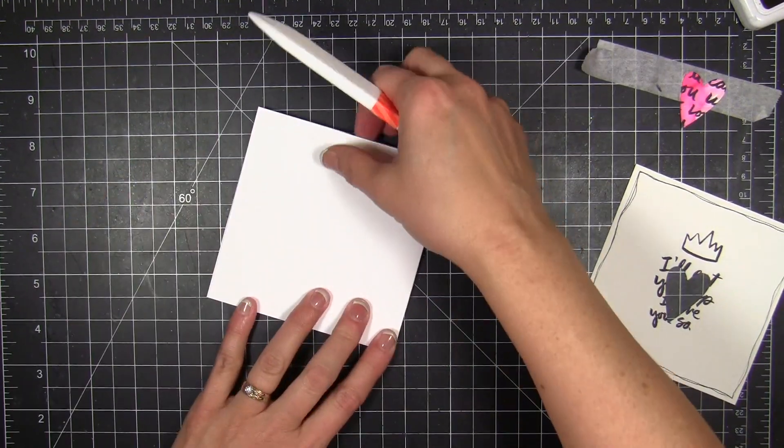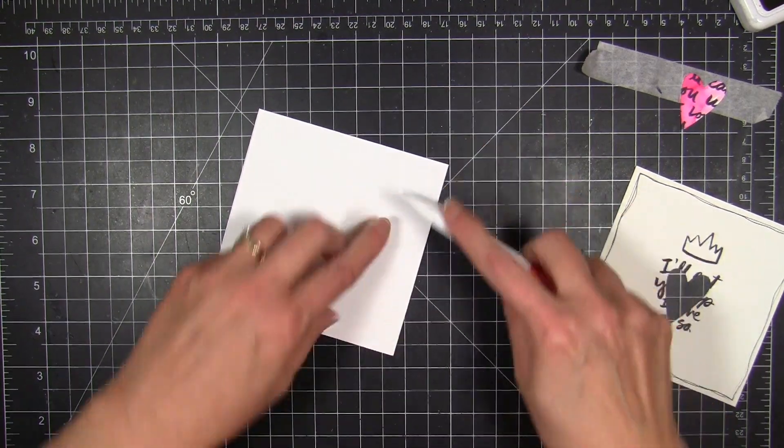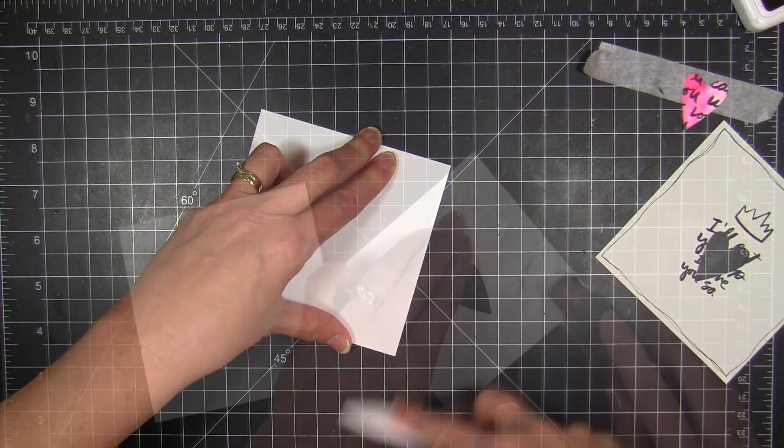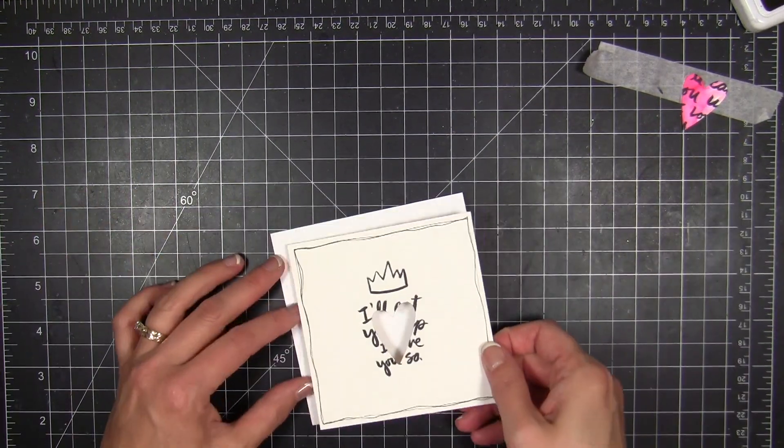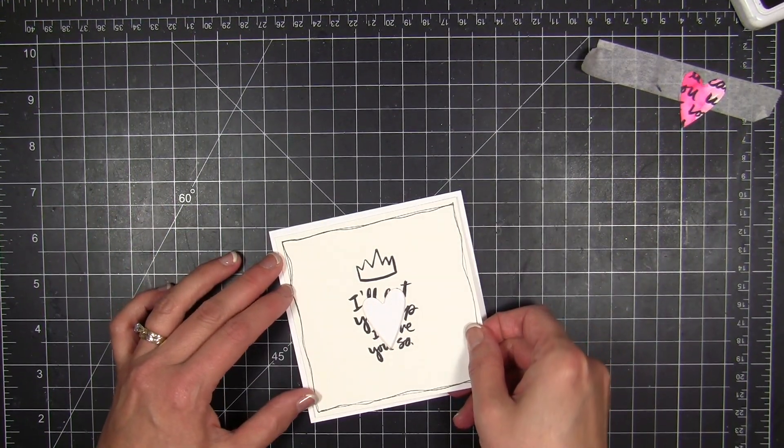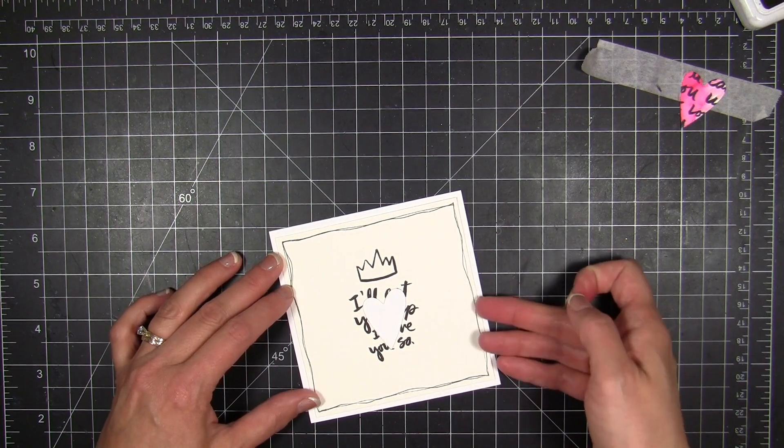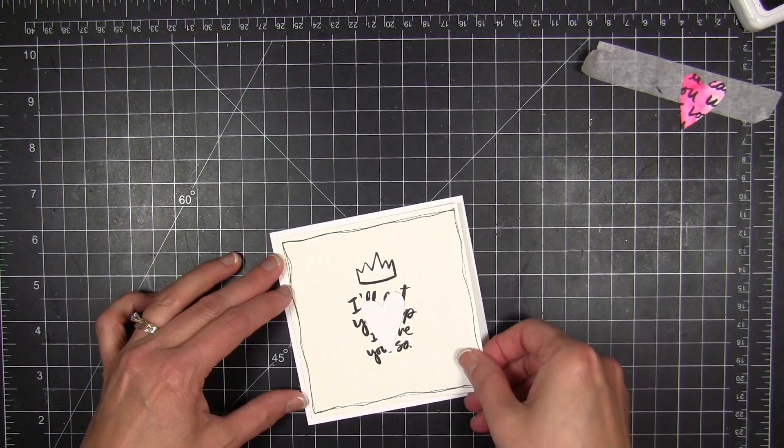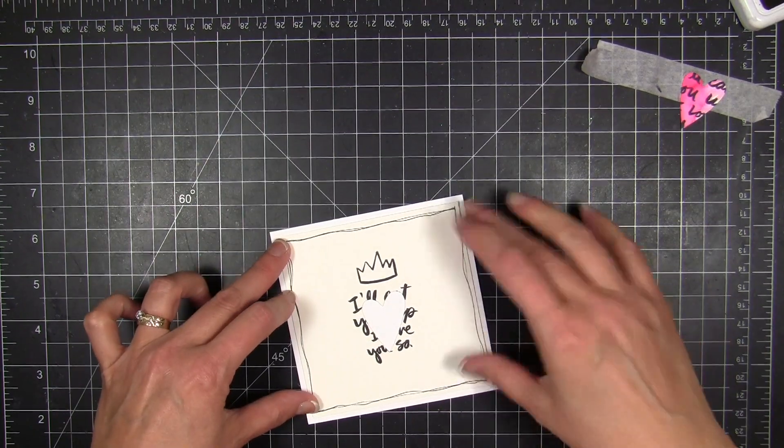I have a base card that I made from some Basil Marshmallow. I love the heavyweight 100 pound weight of this cardstock. I went ahead and made the card four and a quarter inches all around square, and then went ahead and creased it with my Teflon bone folder after I scored it.